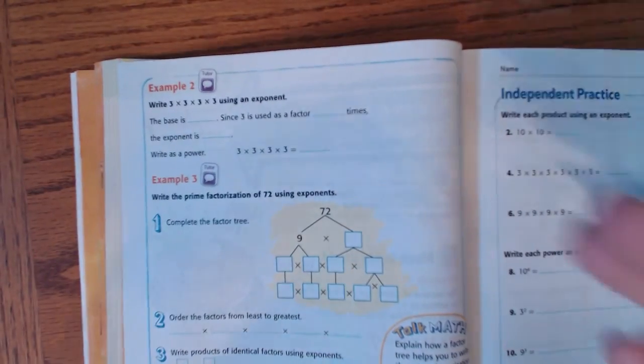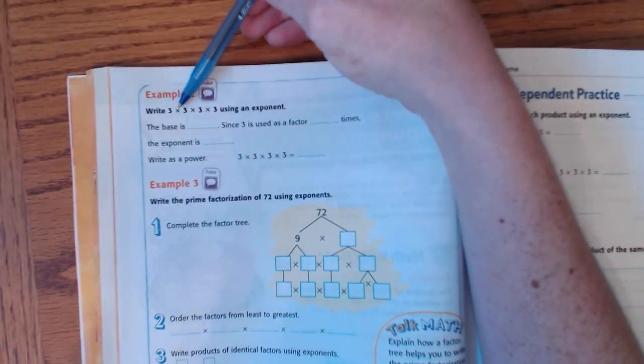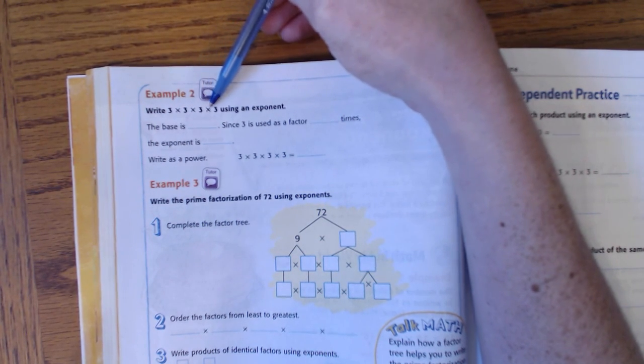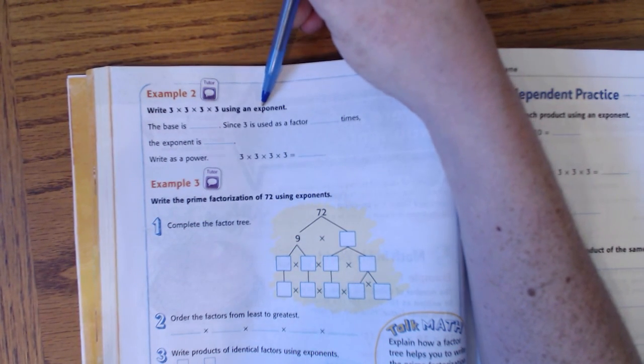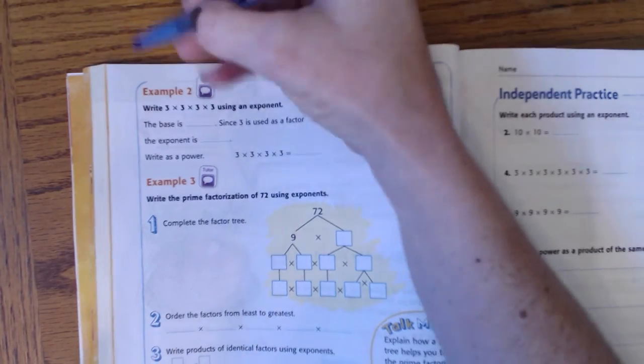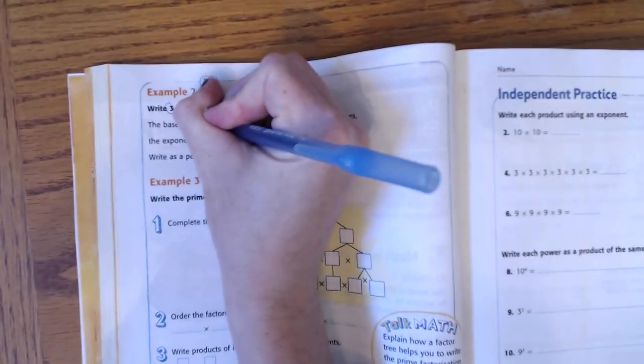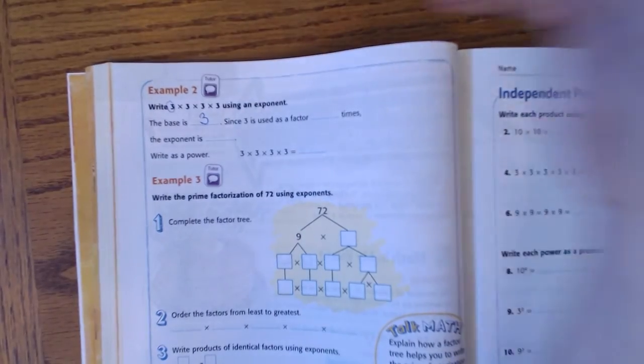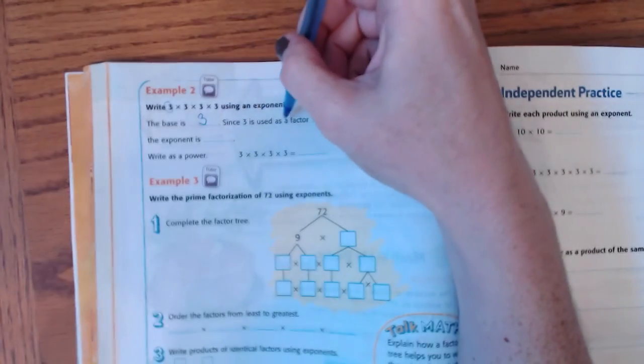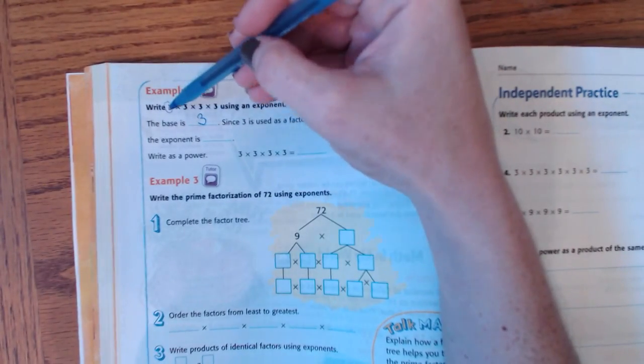So, we have three times three times three times three using an exponent. Well, what number do you see here? That's three. Three is our base.